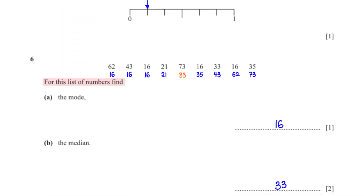For this list of numbers, find the mode. The mode is simply the most recurring number. From the list, this number is 16.